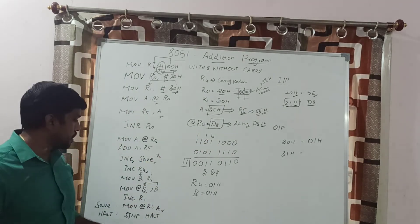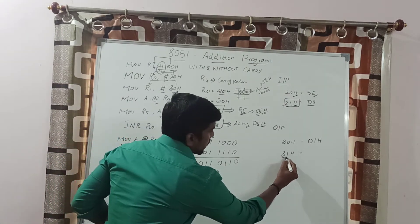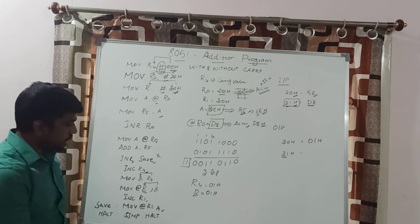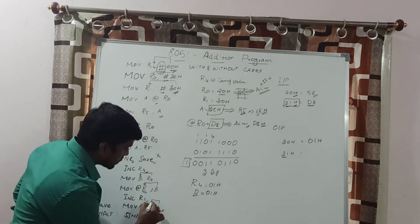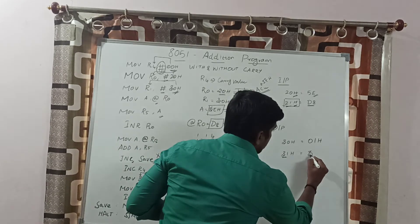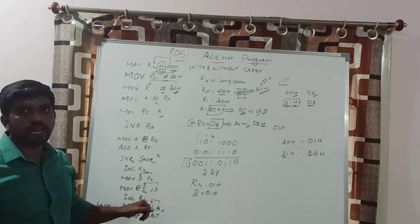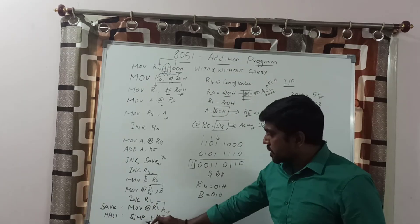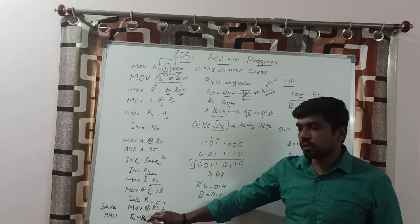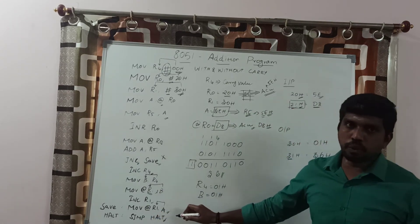After storing the carry, increment the R1 register content. After incrementing R1 you get 31H. The next instruction MOV @R1, A stores the accumulator content into the memory location 31H. The accumulator holds the sum 36H, so this content is transferred to memory location 31H. The next instruction is SJMP — short jump — which halts the program. That is the end of the program.